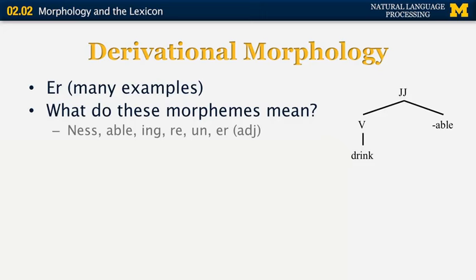The suffix '-ness' is used to form nouns. For example, 'sleepy' is an adjective, and 'sleepiness' is a noun derived from 'sleepy' — so '-ness' turns an adjective into a noun. '-able' can turn a verb into an adjective. We can also consider the meaning of other prefixes and suffixes such as '-ing.' 'Re-' is usually used at the beginning of a word and means to repeat something.